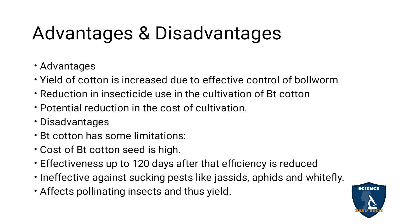Effectiveness lasts up to 120 days — for the first 120 days the boll worms will die, but after that there is no effectiveness. BT cotton is also ineffective against sucking pests like jassids, aphids, and whiteflies, which suck the juice of the plant. The cry gene does not work on these sucking pests.